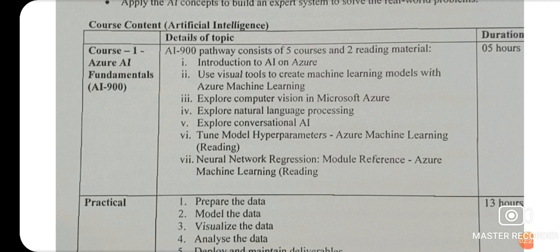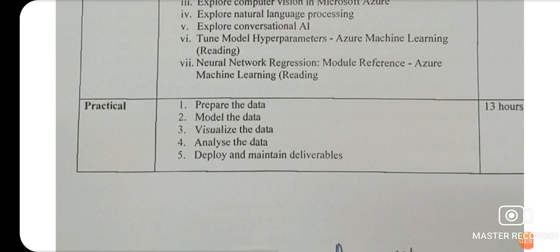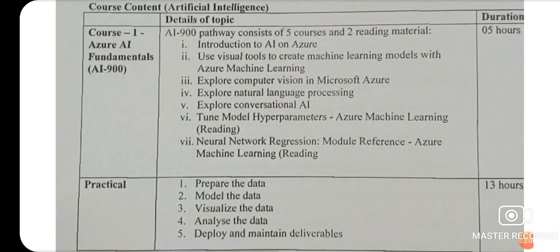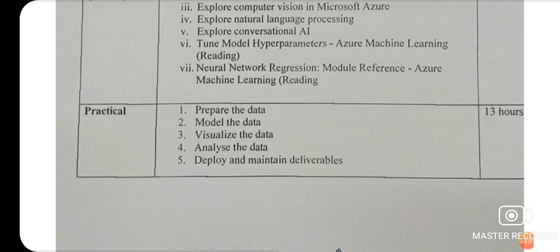The course one AI-900 pathway includes: introduction to AI on Azure, use visual tools to create machine learning models with Azure Machine Learning, explore computer vision in Microsoft Azure, explore natural language processing, explore conversational AI, and tune model hyperparameters in Azure Machine Learning. Reading materials include neural network regression module reference on Azure Machine Learning. The practicals cover how to prepare, model, visualize, analyze, deploy, and maintain the deliverables.